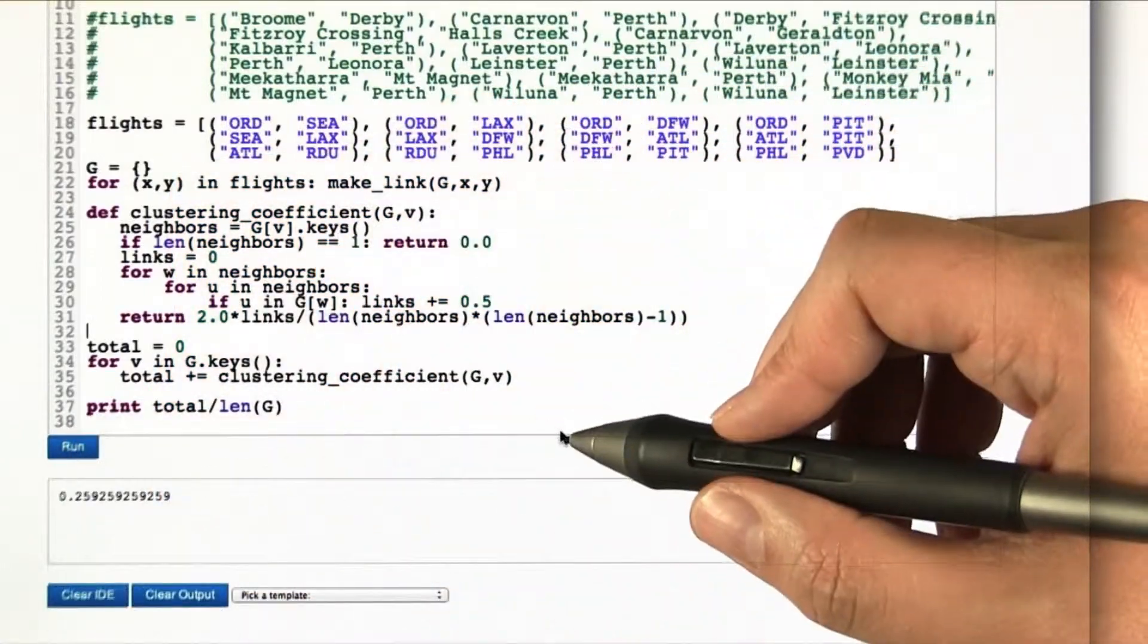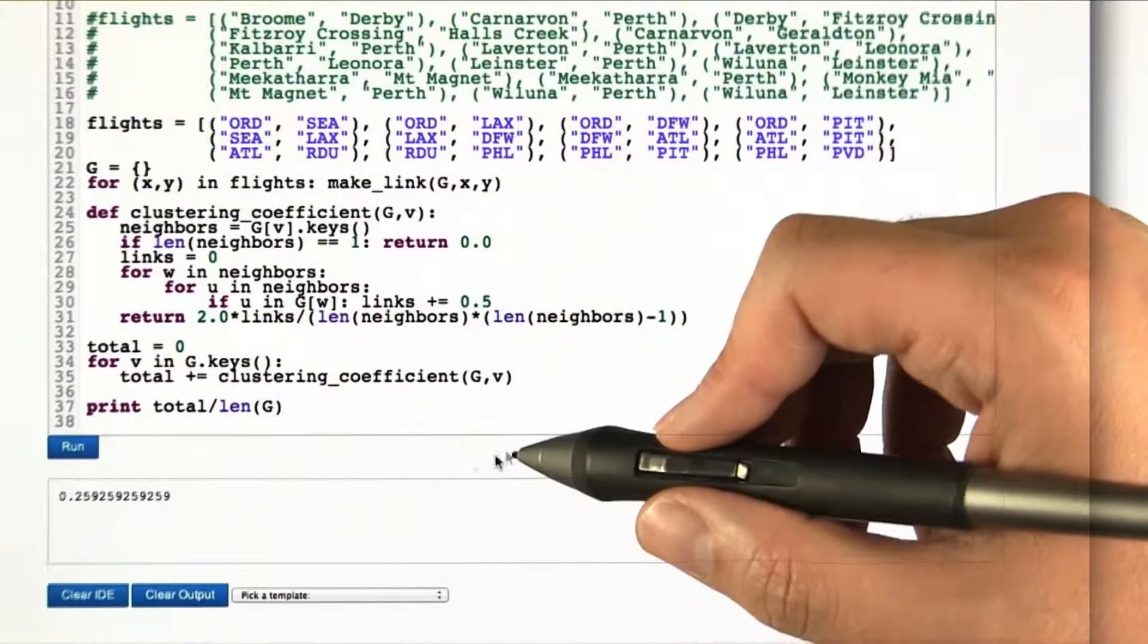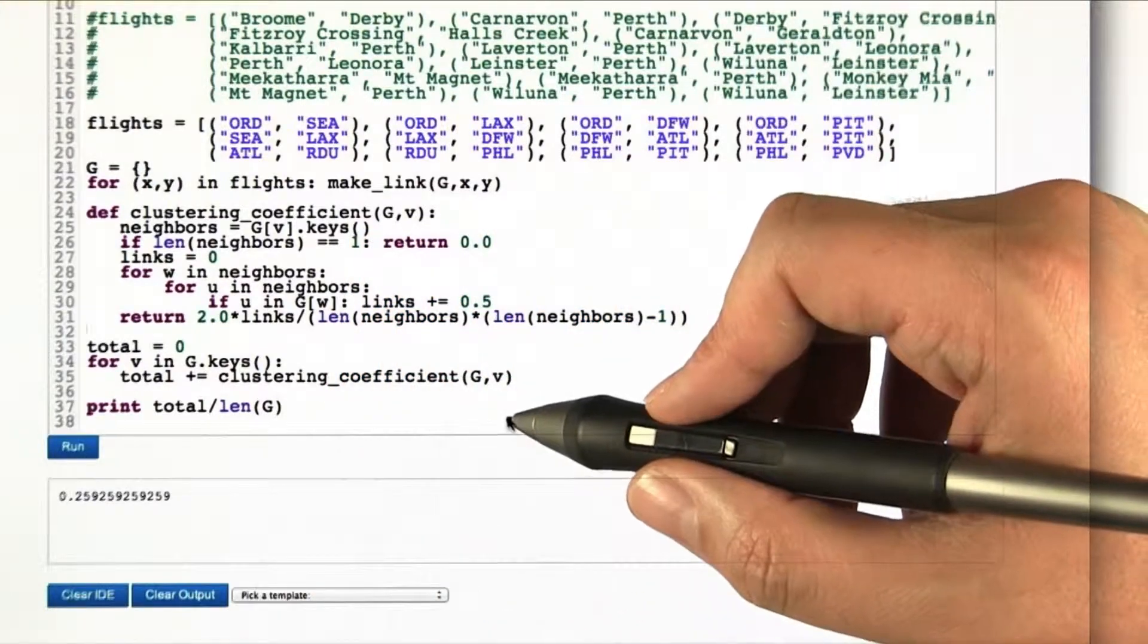So in this case, it's a little bit above a quarter, which is pretty clumpy. So there's a fair amount of interconnection between a node's neighbors.